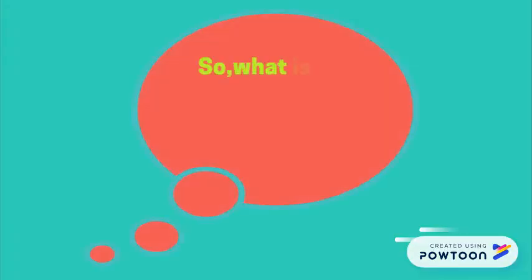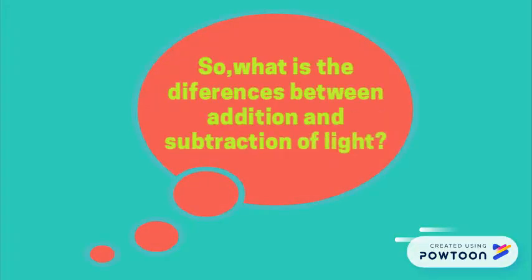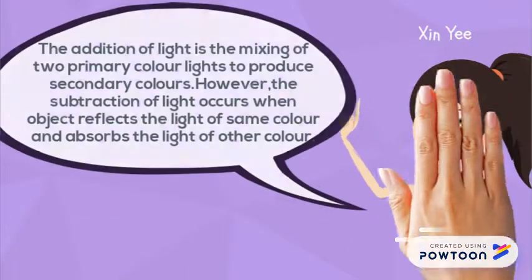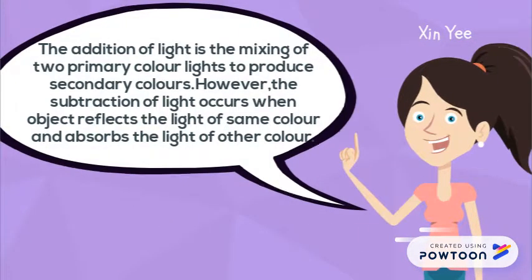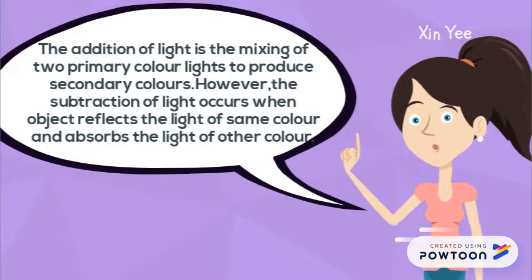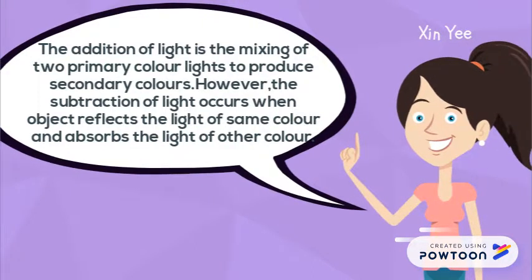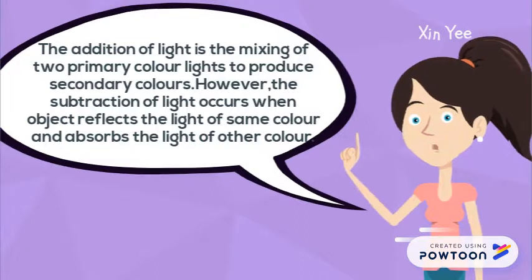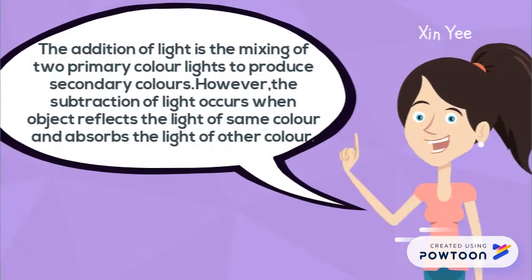So, what is the difference between addition and subtraction of light? The addition of light is the mixing of two primary color lights to produce secondary colors. However, the subtraction of light occurs when objects reflect the light of the same color and absorb the light of another color.